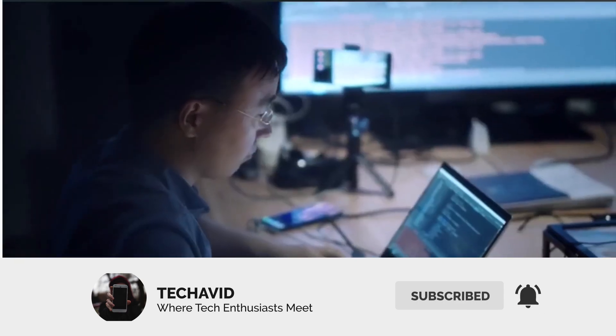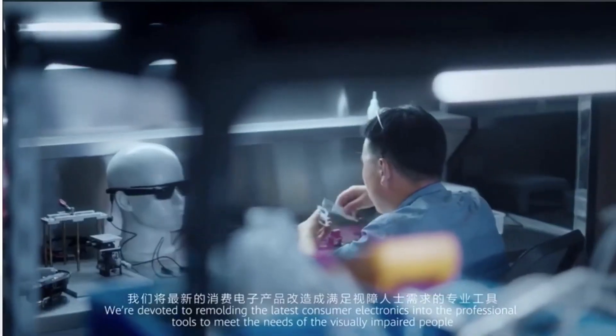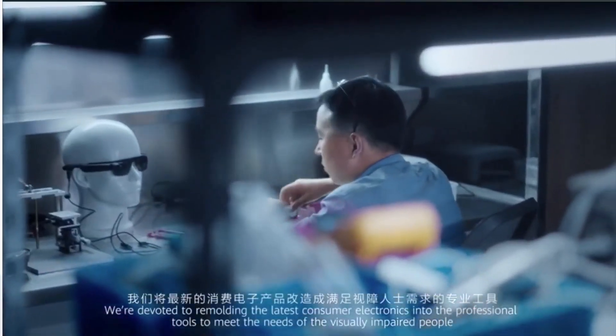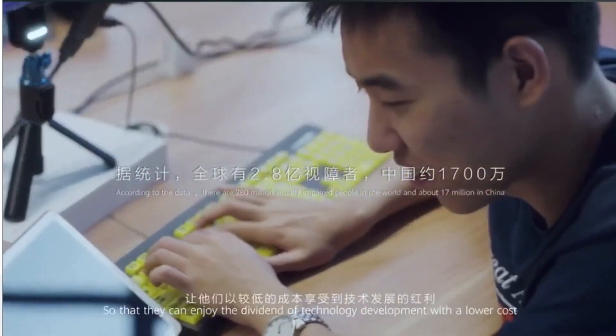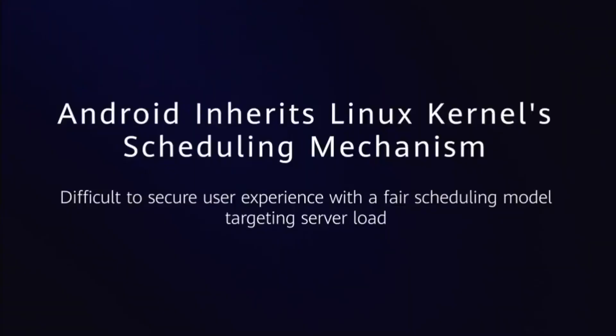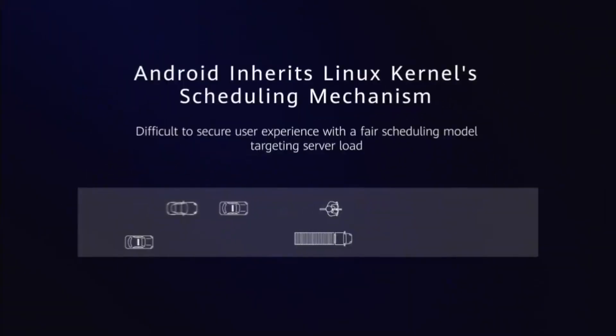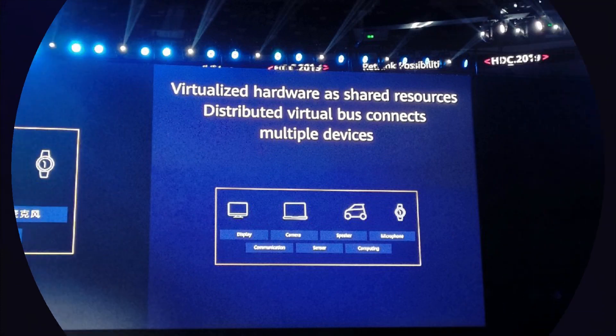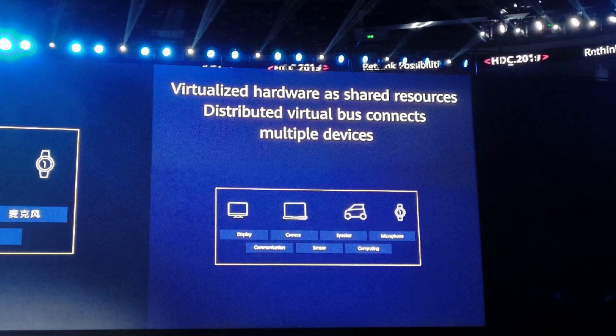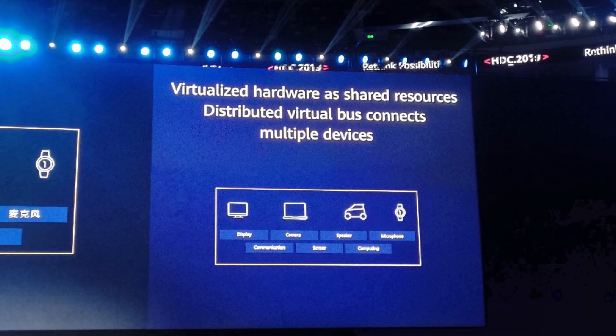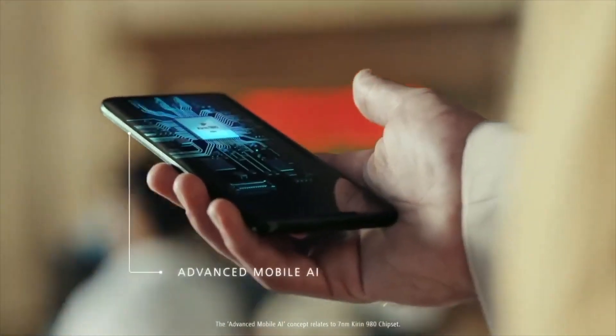Performance is theoretically better than Android and other Linux-based operating systems, according to slides shared by Huawei. Huawei says that Harmony OS uses a distributed virtual bus with a simplified protocol rather than four layers — there is only one layer in the protocol stack to boost payload efficiency.